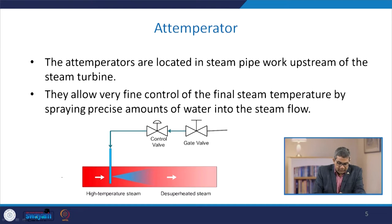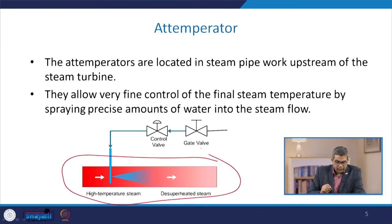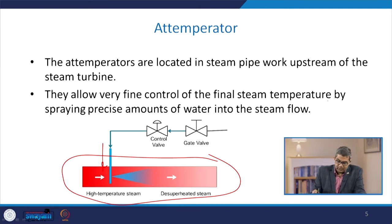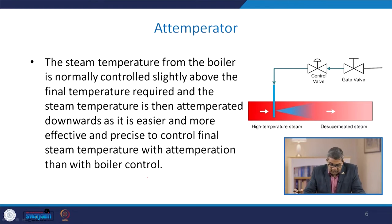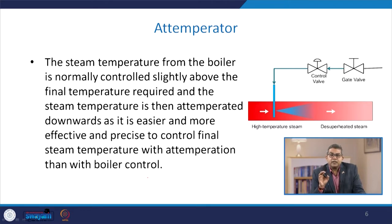Recalling from the previous lecture on reheaters, the attemperators are located in steam pipework upstream of the steam turbine. They allow very fine control of final steam temperature by spraying a precise amount of water into the steam flow. The steam temperature from the boiler is normally controlled slightly above the final temperature required, attributed to the various irreversibilities associated with the steam piping network.